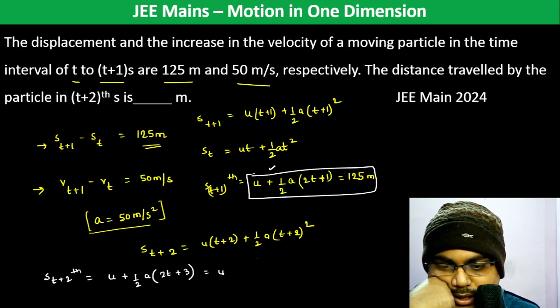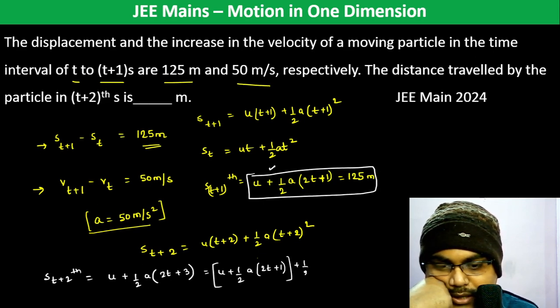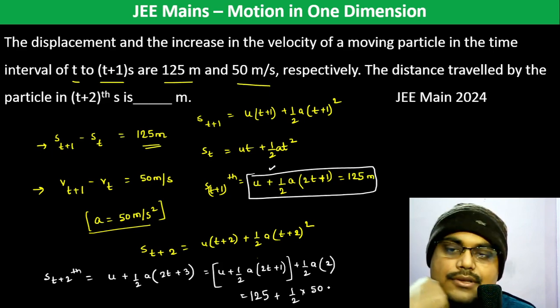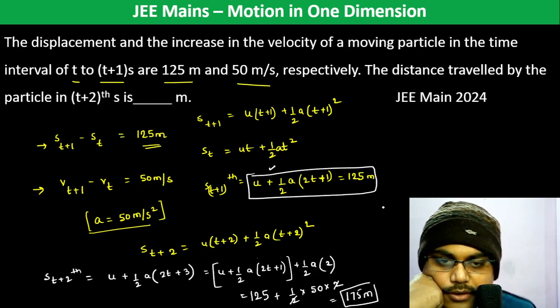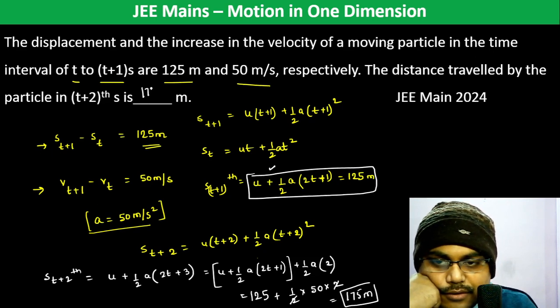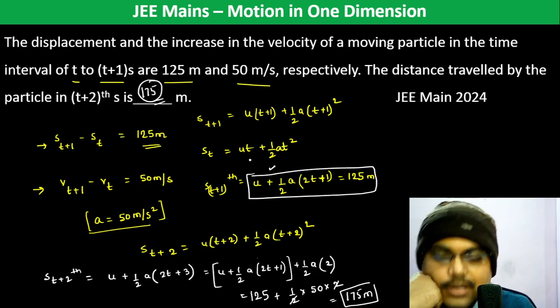I can write u + 1/2 a(2t+1) + 1/2 a(2). This 125 is given, plus 1/2 times acceleration is 50 times 2. This becomes 175 meters. 175 is the answer.